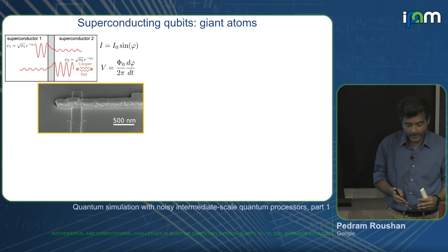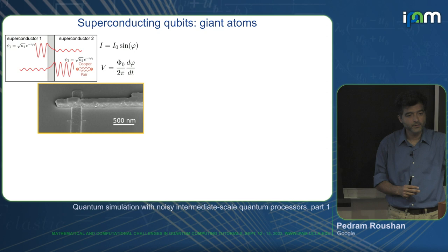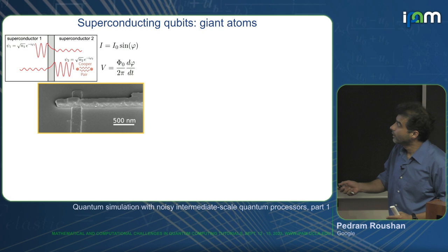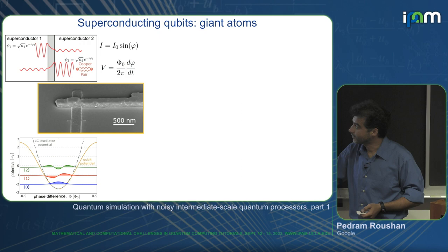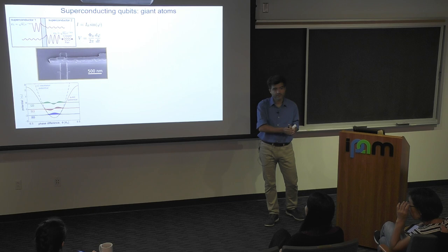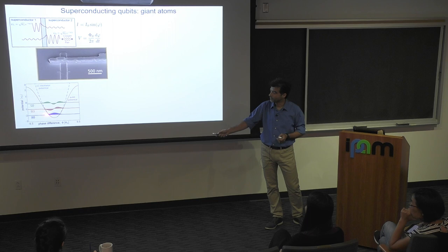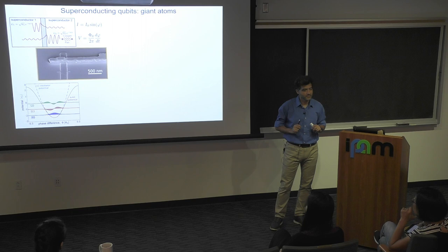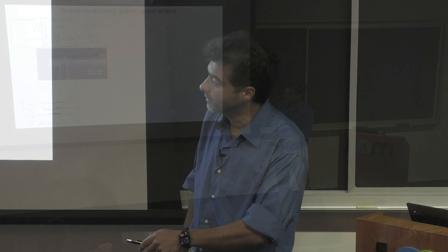This is in contrast to linear inductive elements, where the relation between current and flux or phase is linear. Now we have a sinusoidal one, meaning there are higher-order terms in the relation between current and phase. This enables you to make a nonlinear element — crucial for making our giant atom. If you put this element next to a capacitor, you make an LC circuit, but with a major difference: instead of having linear level spacing as in an LC oscillator, you have nonlinear spacing.